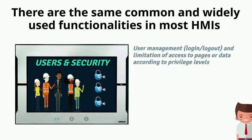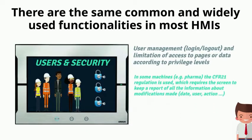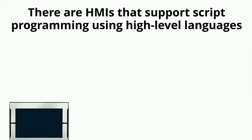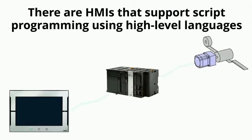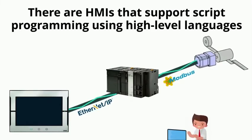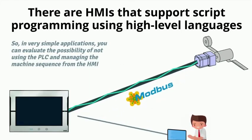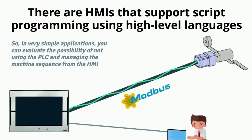Users and security is another important function. In some machines the 21 CFR regulation is used, which requires the screen to keep a report of all information about modifications — including data, user, and action — and is mostly used in pharma. Some HMIs also support script programming using high-level languages.